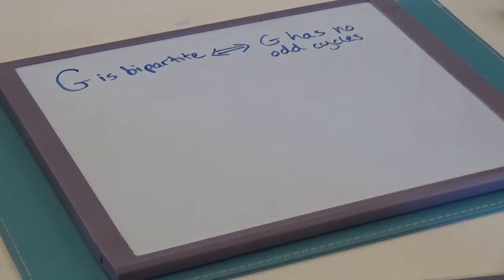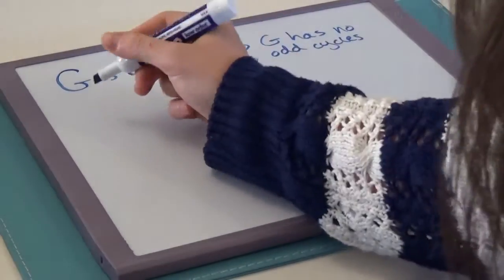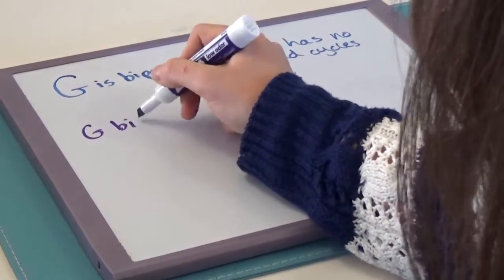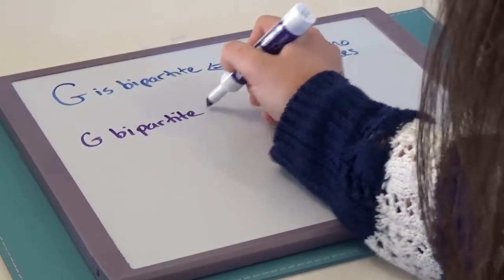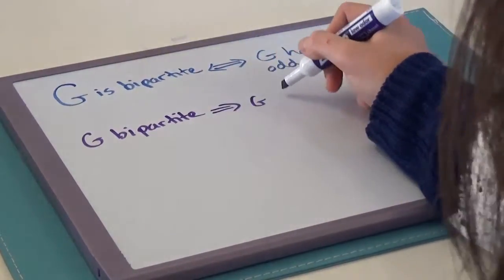And what do we mean when we say necessary and sufficient? Well, the fact that we have if G is bipartite, then G has no odd cycles.